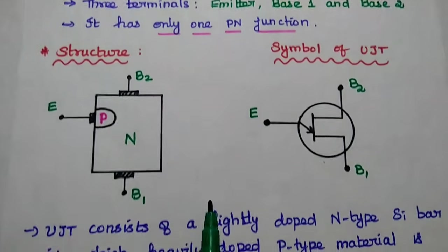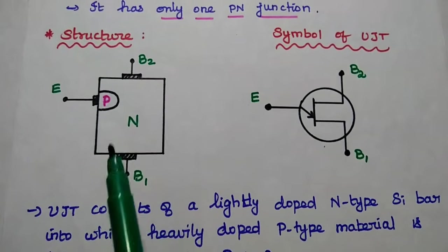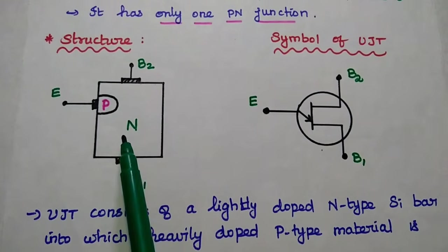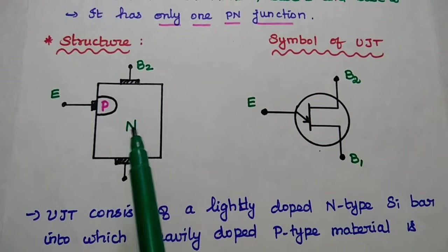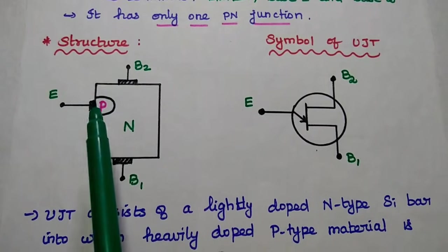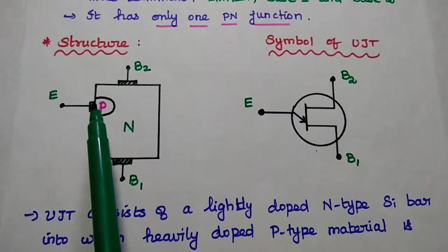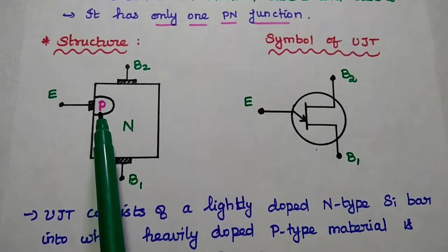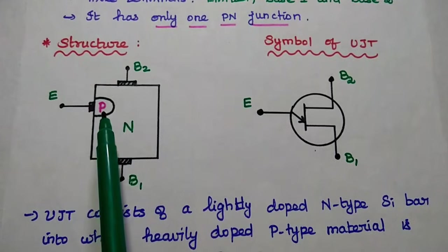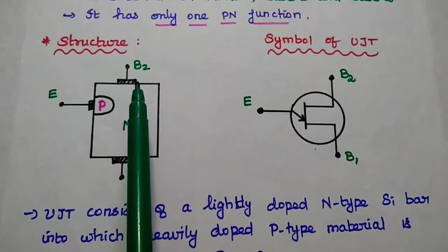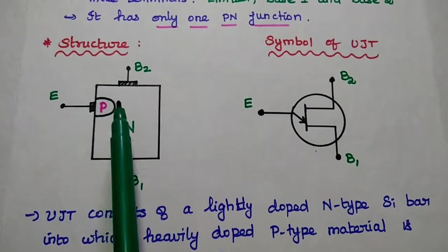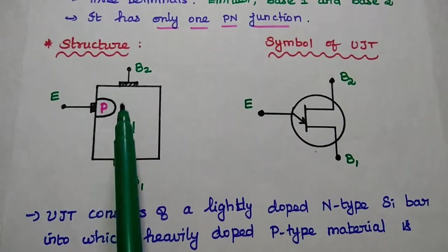Next, the structure of UJT. It consists of a lightly doped N-type silicon bar into which a heavily doped P-type silicon material is diffused, which is closer to the B2 terminal. So it forms one PN junction.